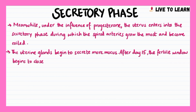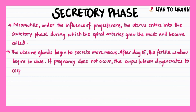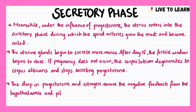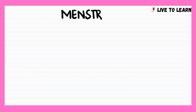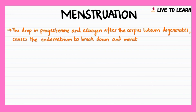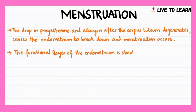If pregnancy does not occur, the corpus luteum degenerates to corpus albicans and stops secreting progesterone. The drop in progesterone and estrogen removes the negative feedback from the hypothalamus and pituitary, and the levels of FSH begin to rise again. The drop in progesterone and estrogen after the corpus luteum degenerates causes the endometrium to break down and menstruation occurs. The functional layer of the endometrium is shed and eliminated via the vagina, a process known as the menstrual period, lasting about 5–7 days.